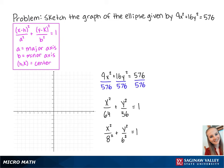Now that our equation is in standard form, we know that a is equal to 8 and will be horizontal since it is underneath the x, b is equal to 6 and will be vertical since it is underneath the y, and the center is at 0, 0.